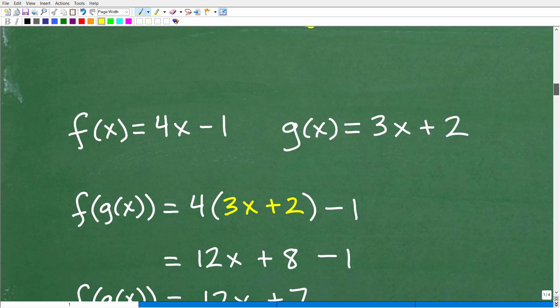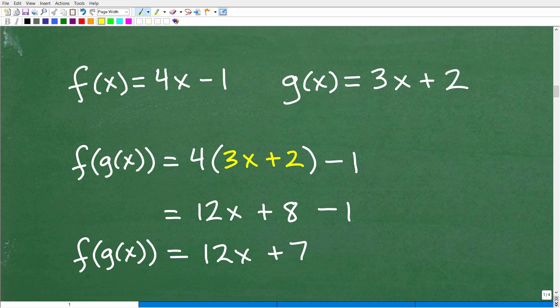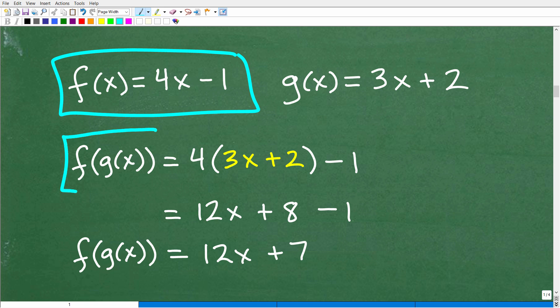Okay, so let's get back to this example on composite functions. So we have f(x) is equal to 4x minus 1. This is our function, okay? And we want to find the composite f of g of x. Okay, so that means that we're going to be plugging in this function, g(x), into the f function.